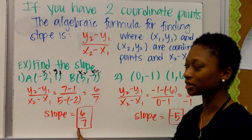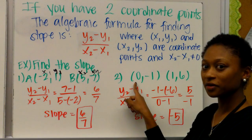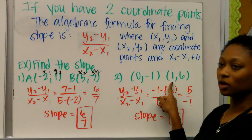So that equals 7. So our slope would be 6 over 7 here. Example number 2. We have the point 0, negative 1, and 1, 6.